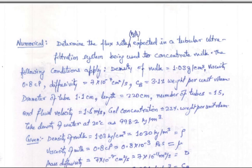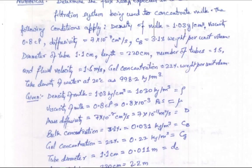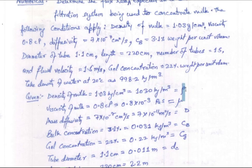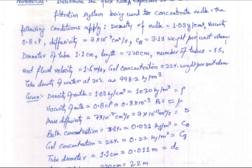The first numerical: determine the flux rate in kg/hr expected in a tubular ultrafiltration system being used to concentrate milk. Given data — density of milk converted to SI, viscosity in SI, diffusivity D, bulk concentration CB = 3.1% w/v = 0.031 kg/m³, tube diameter 1.1 cm used as DC (circular, so no hydraulic diameter conversion needed), tube length 220 cm converted to SI, number of tubes, fluid velocity, and gel concentration CG = 22% = 0.22.